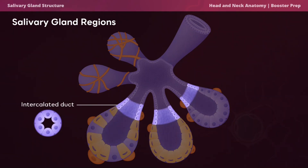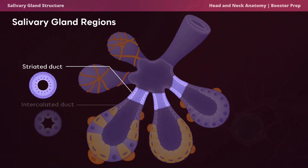The intercalated ducts connect to the acini and serve as a conduit for transporting saliva from the acini to larger ducts that eventually lead to the oral cavity. Intercalated ducts are lined with a simple cuboidal epithelium consisting of a single layer of epithelial cells. They are named intercalated because they are located between the secretory acini and the larger ducts within the glandular tissue.